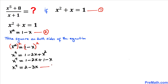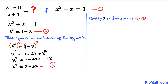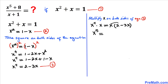For the next step, let's multiply both sides of equation three by x. So we get x to the power 4 times x equals x times (2 minus 3x). On the left hand side that gives us x to the power 5. On the right hand side, distributing gives us 2x minus 3x squared.